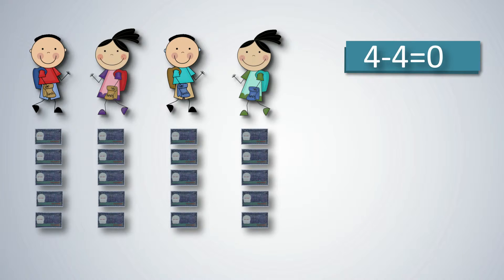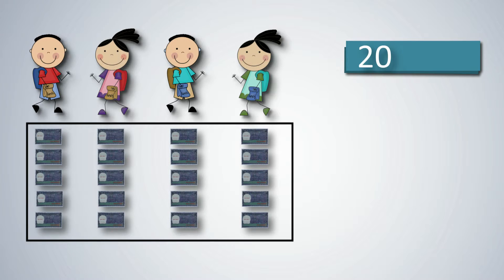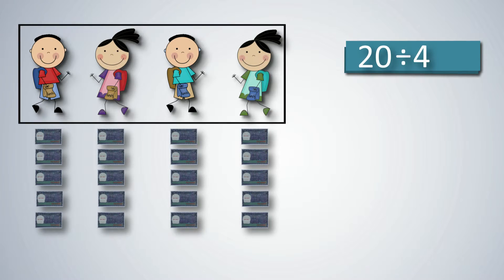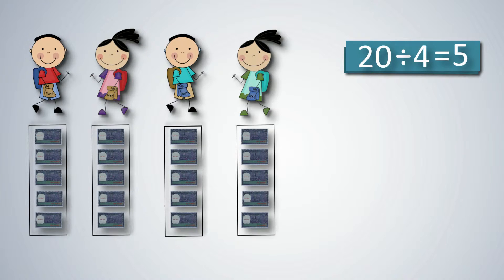Thus, division is a process of repeated subtraction. Here, 20 is the dividend, 4 is the divisor. The answer or quotient is 5 notes.